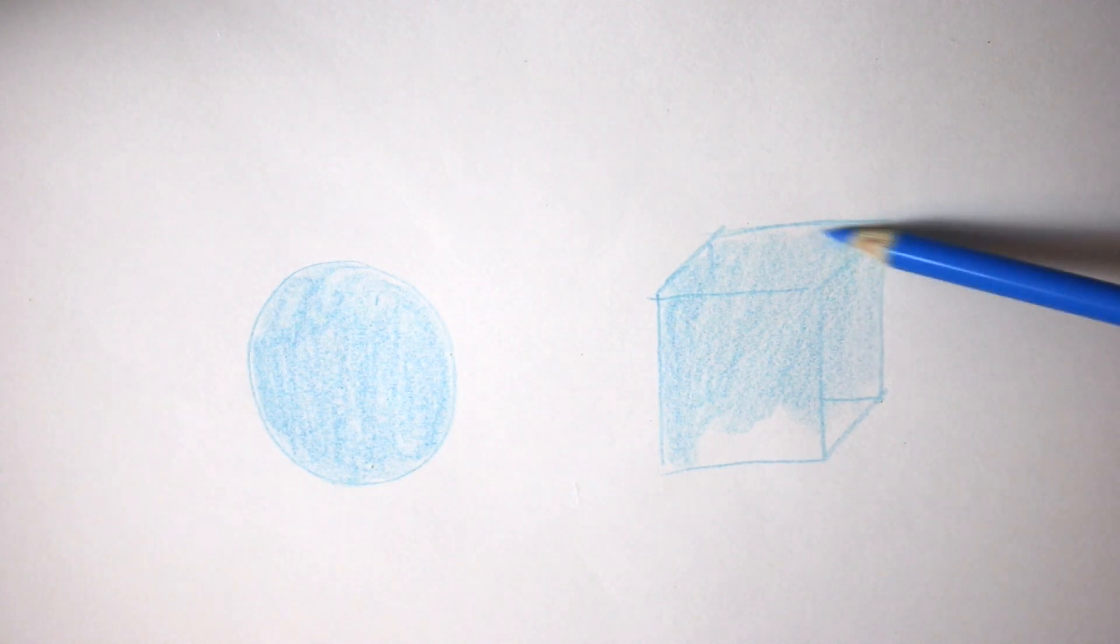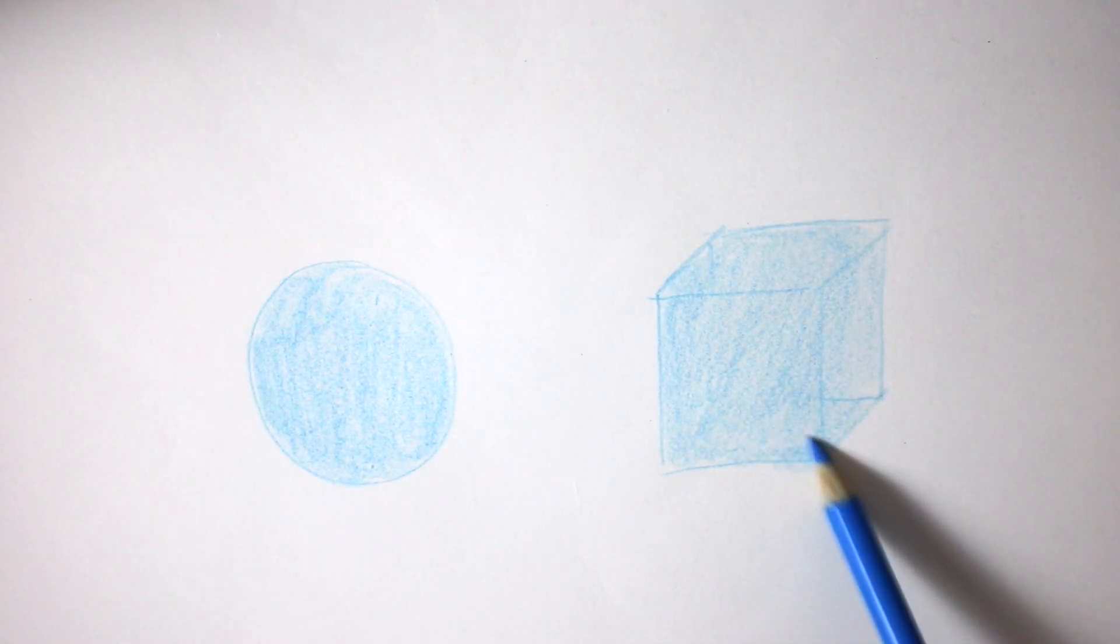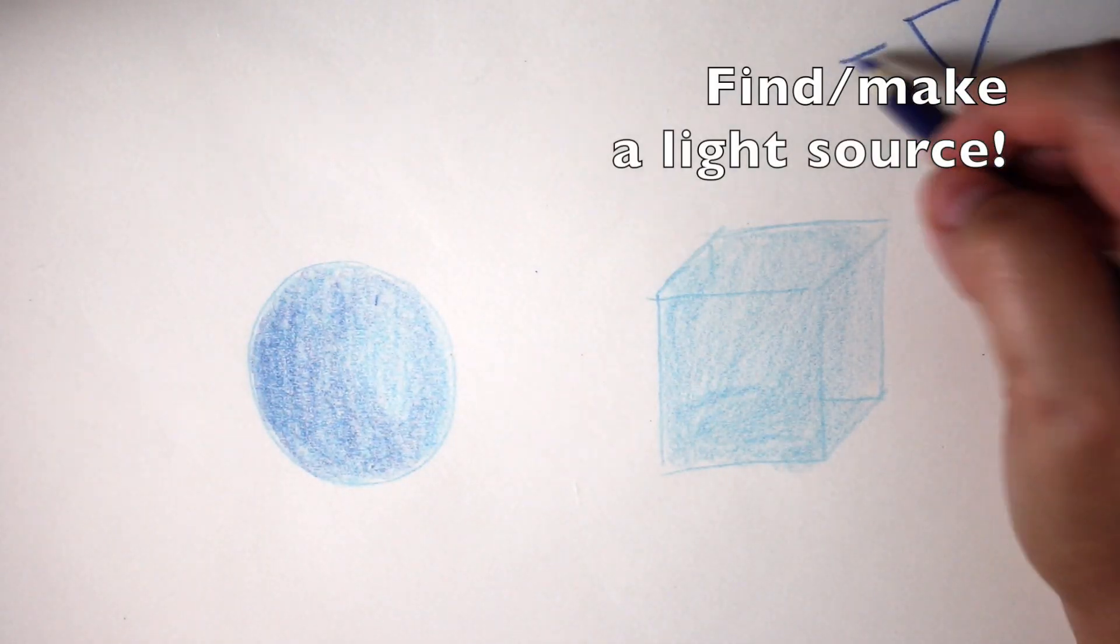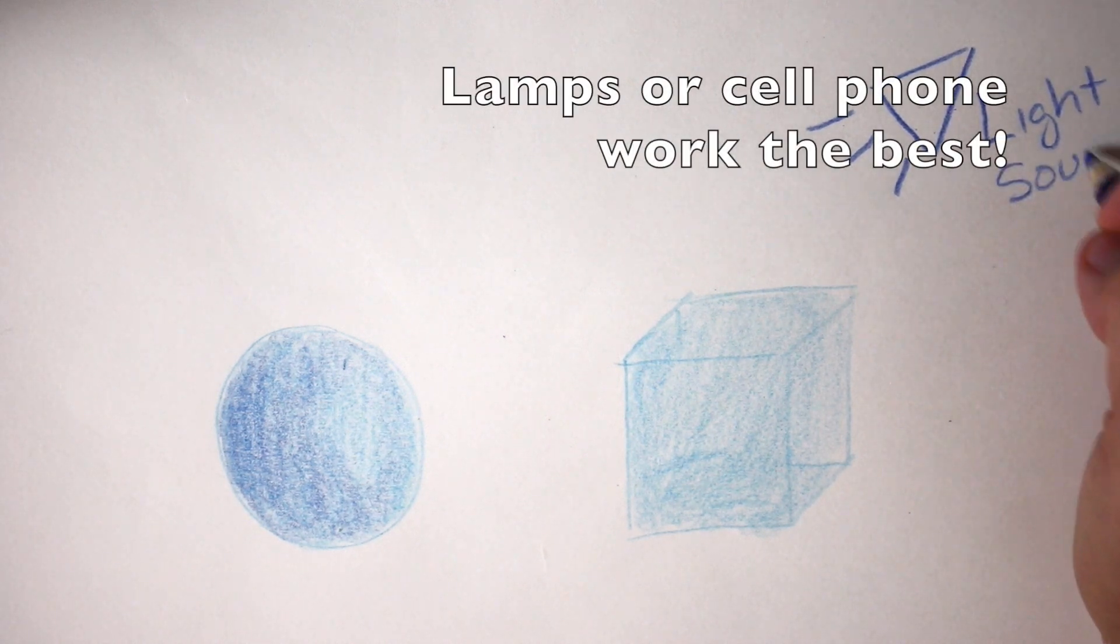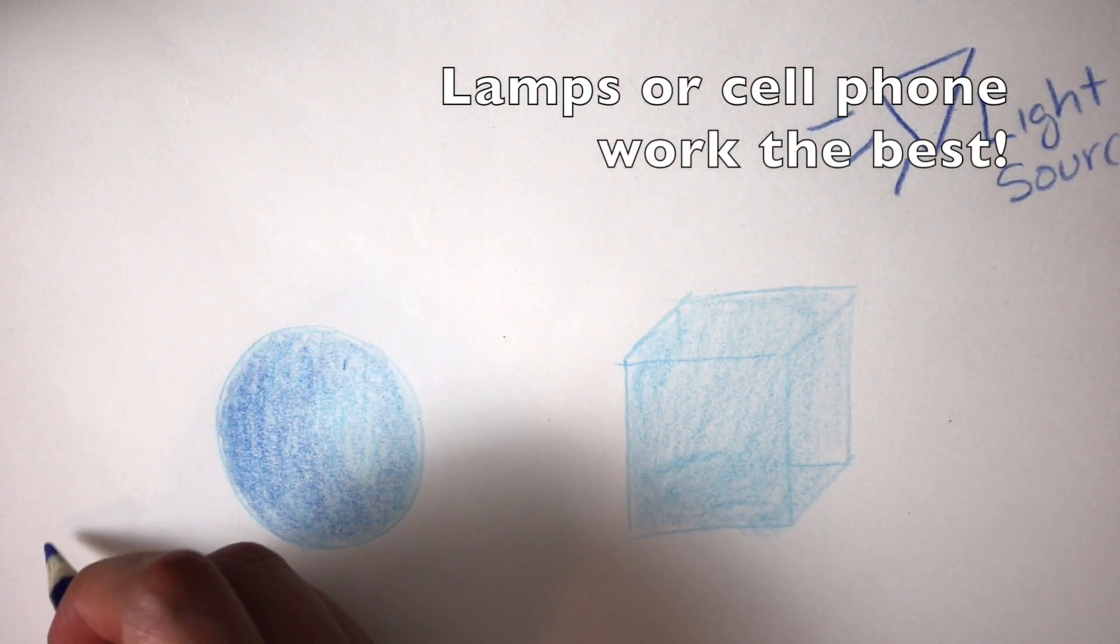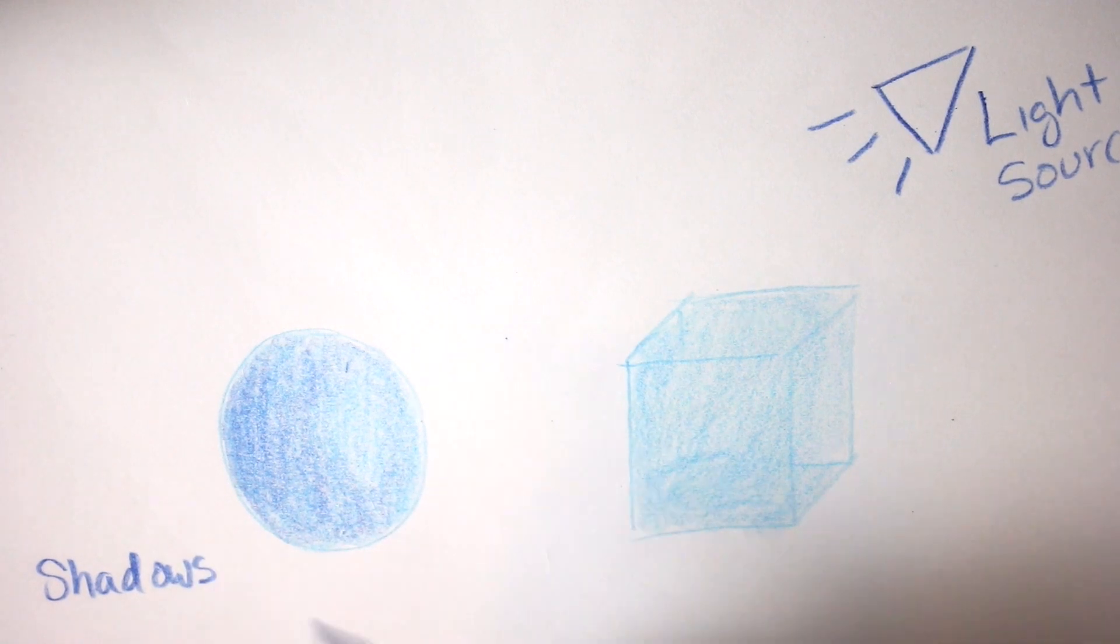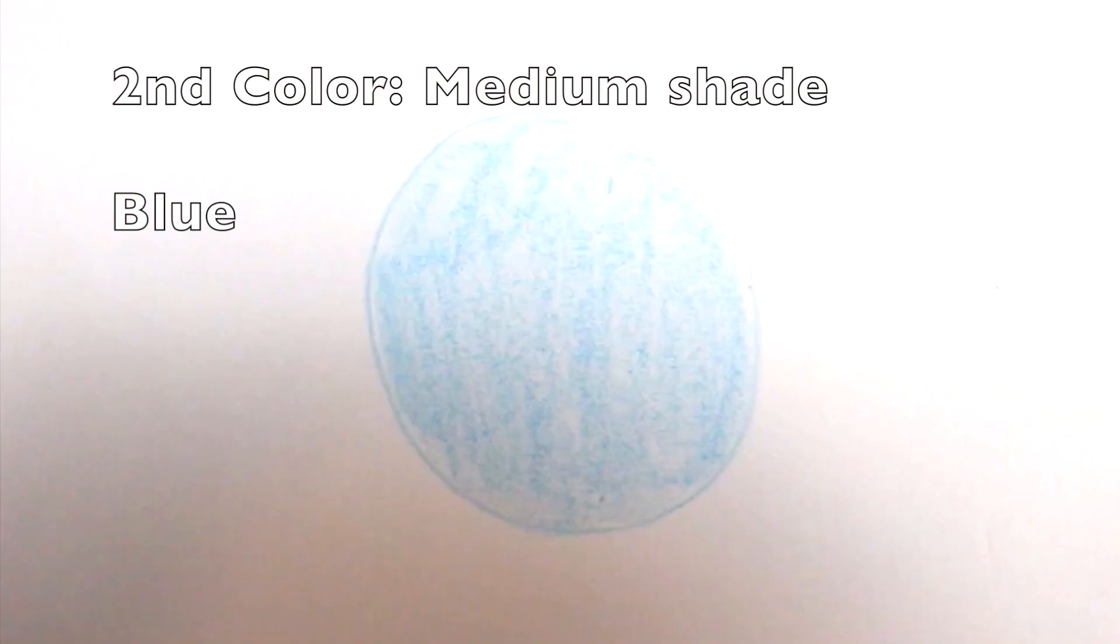It also helps to use the side of your color pencil to color in. If you're just using the tip, you're going to get a lot of what I call chicken scratches. Make sure you don't forget to add a light source—it's very important, otherwise you won't know where to put your shadows and where to keep your highlights.